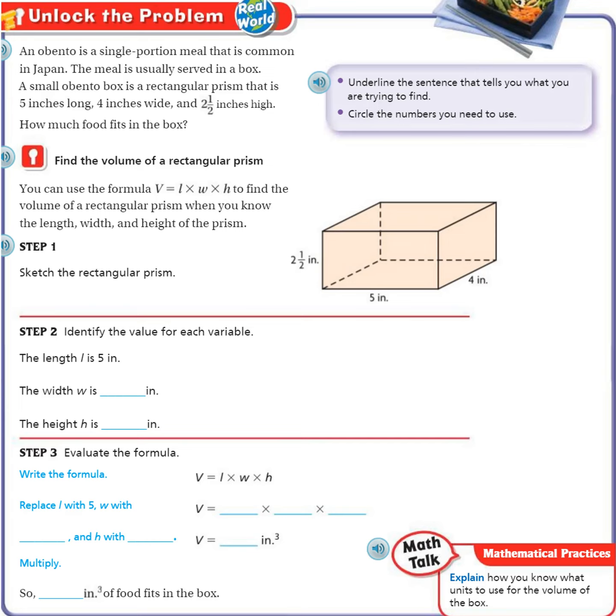Alright, I'm on page 457 of the Go Math Textbook. An Obento is a single portion meal that is common in Japan. The meal is usually served in a box.